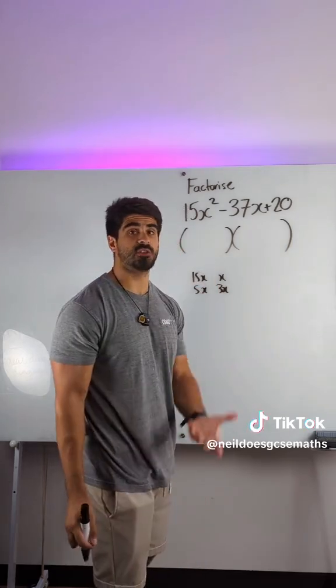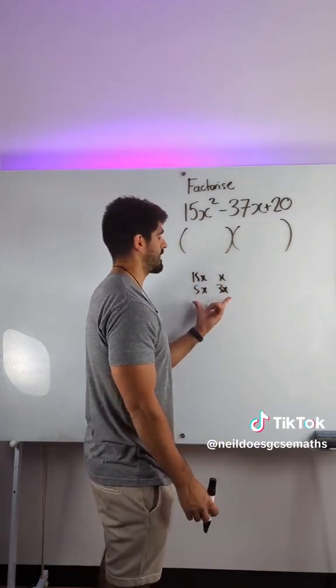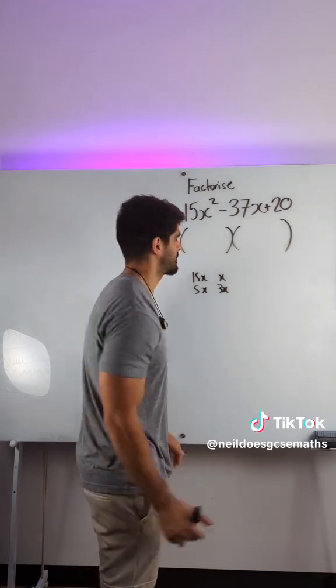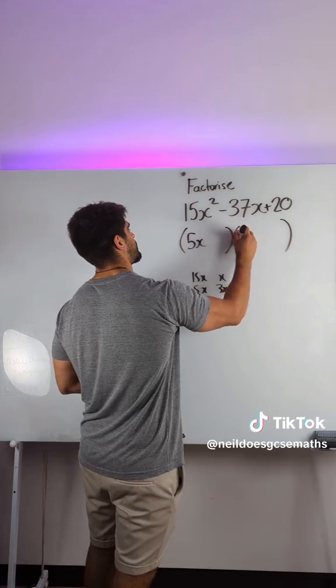We could choose any of them. Always go for the option that is closest together first. So we're going to try out 5x and 3x.